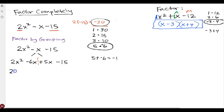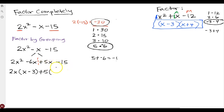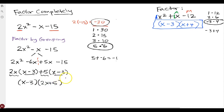For the first two terms, the greatest common factor is 2x. Dividing those out leaves x and negative 3. For 5x minus 15, the greatest common factor is positive 5, leaving x and negative 3. These remainders are the same — if they're not the same, you've done something wrong. That means (x minus 3) is one factor, and from what's left over, (2x plus 5) is the other factor.